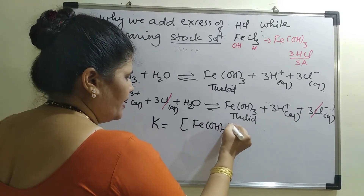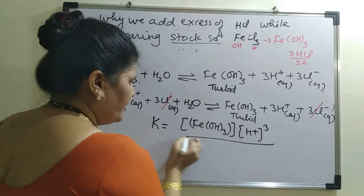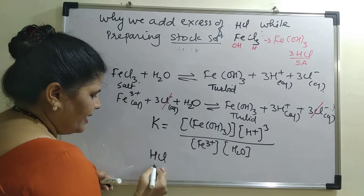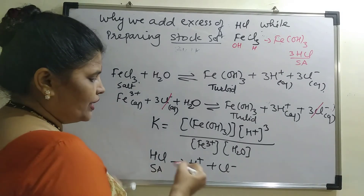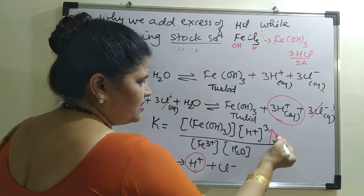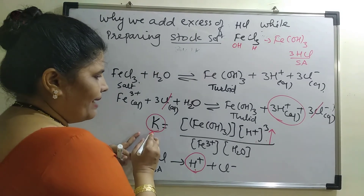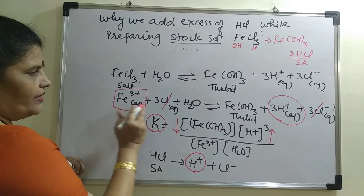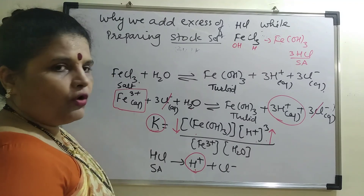When we add HCl — a strong acid — it gives H⁺ and Cl⁻. The H⁺ ion concentration in the solution increases. As this increases, the equilibrium constant would be disturbed, so to re-establish equilibrium, the Fe(OH)₃ concentration must decrease. Fe(OH)₃ starts decomposing to give Fe³⁺, which remains in dissolved form, and thus we overcome the turbidity. This is why we add H₂SO₄ during preparation of the stock solution of copper sulfate, and HCl while preparing the stock solution of ferric chloride.